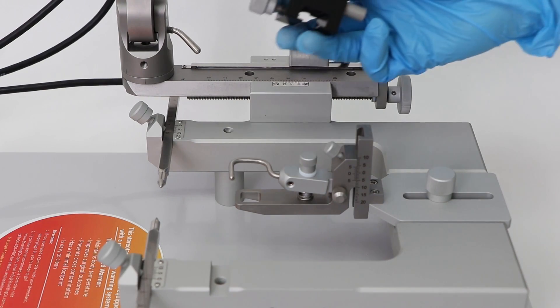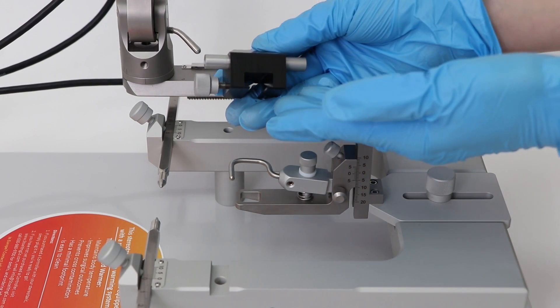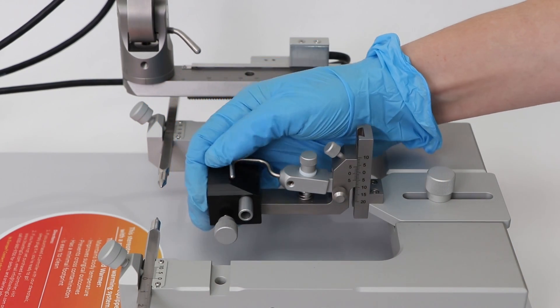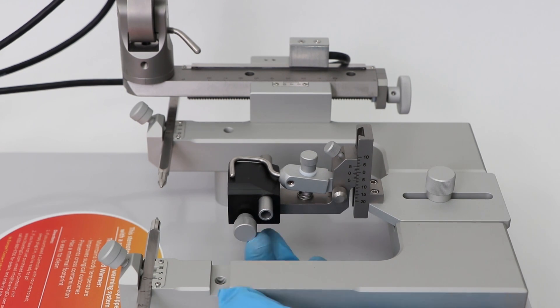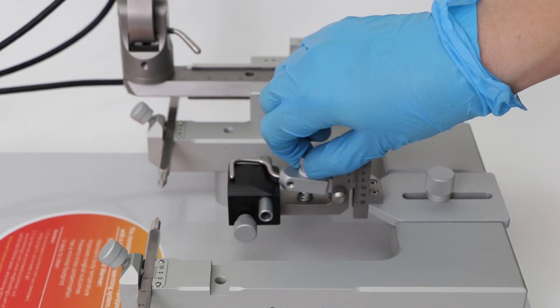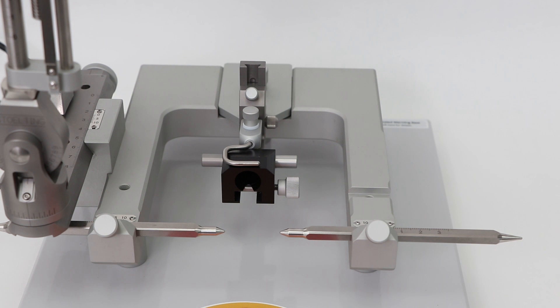Attach the rat anesthesia mask onto the nosecone clamp. Make sure it is fitted securely using the fastening screw. Connect your anesthesia system of choice to the connection port seated at the back of the mask block.